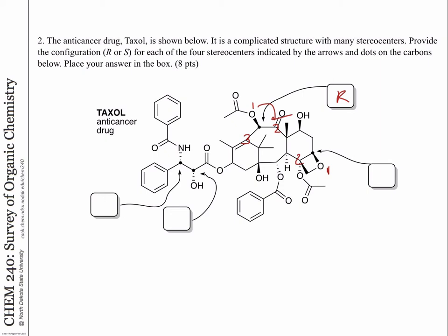For the one on the right, it's one, two, and three — the hydrogen is going down — so that's also R configuration. For the next one, we have oxygen, obviously number one, and we have a carbon attached to oxygens or a carbon attached to nitrogen. The one attached to oxygen is our higher priority. So that is R — but the hydrogen is pointing up, so you have to be careful with that one. So that's also R. And the last one — one, two, three — going clockwise, the hydrogen pointing up — that one has to be S.